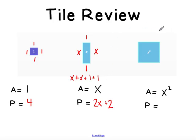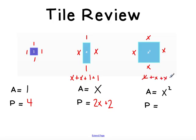Then we can look at our x squared tile. These heights are the same, so these are x as well. It's a perfect square. Since we have x as the base and x as the height, we have x times x, which is x squared. When we're talking about perimeter, we are adding up those 4 sides: x plus x plus x plus x, and we get 4x.